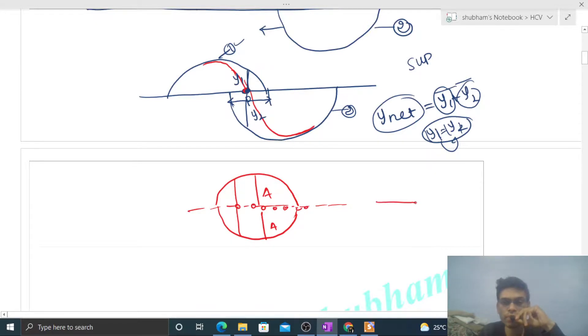Kuch time ke baad kya hoga? Jo wave 1 hai, further kuch distance aage jayega, wave 2 kuch further distance peeche aayega, and again usi tarah ka shape banega, something like this. Aap dekho, isi tarah se kuch shape banega na, final shape. Jaise yahan par bana tha, and uske baad kya hoga? Ki wave 1 further aage jayega, wave 2 further peeche aayega.